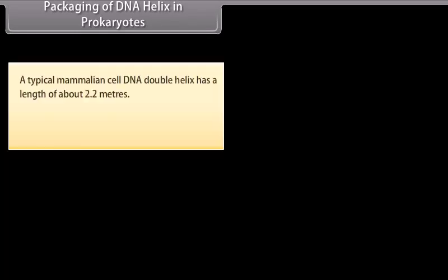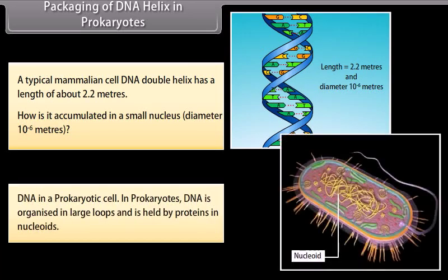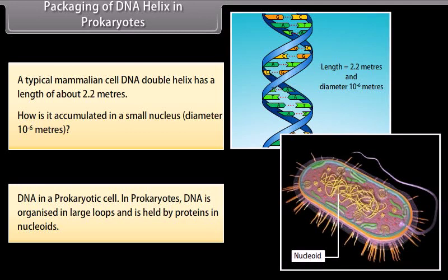A typical mammalian cell DNA double helix has a length of about 2.2 meters. How is it accumulated in a small nucleus? In prokaryotes, DNA is organized in large loops and is held by proteins in nucleoids.